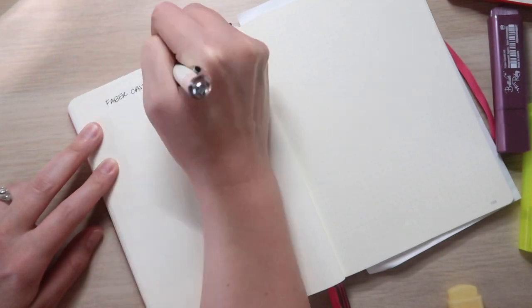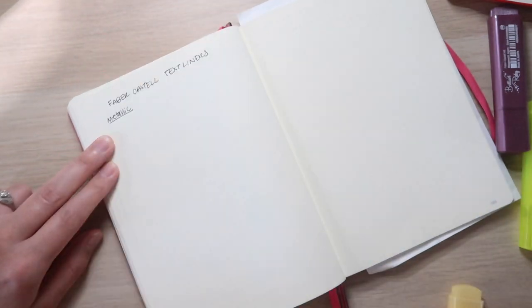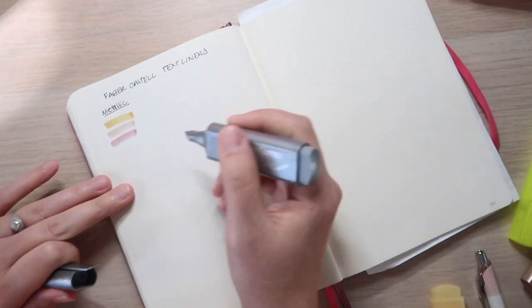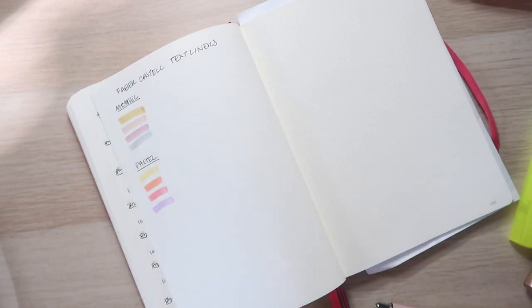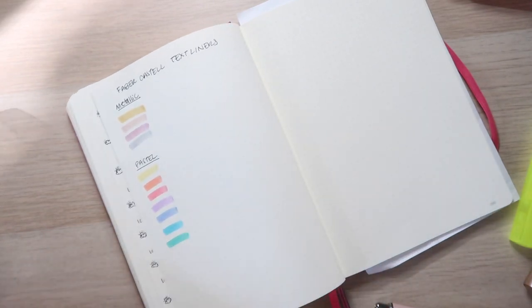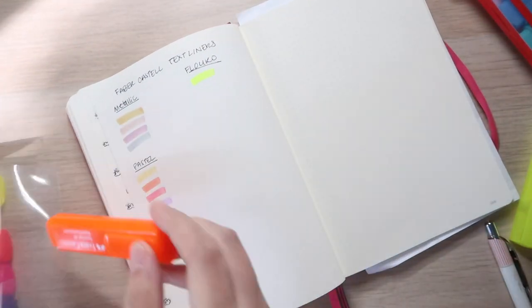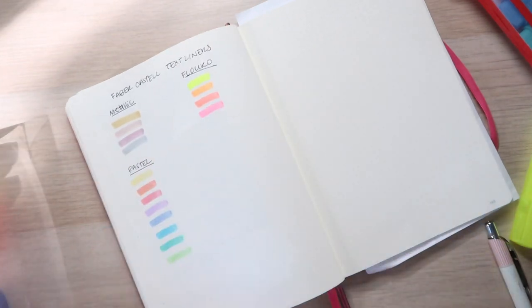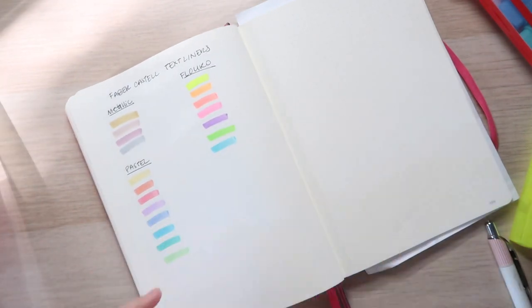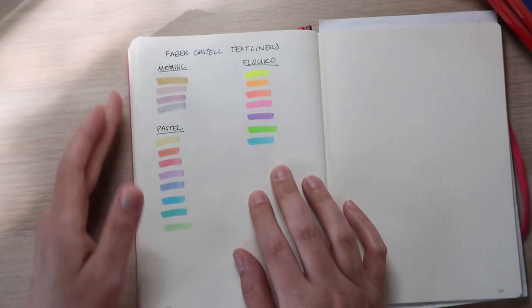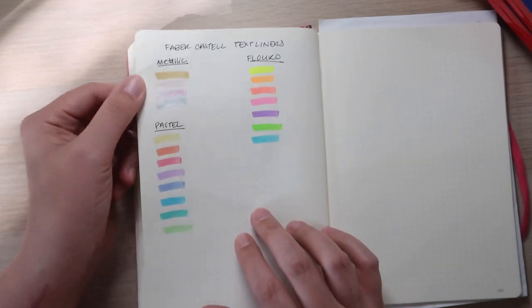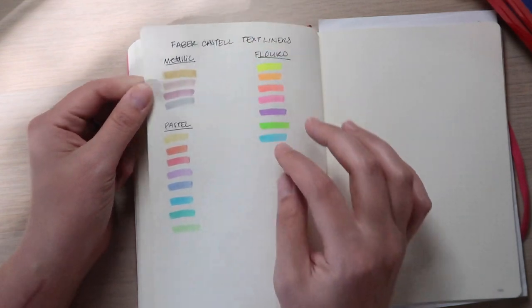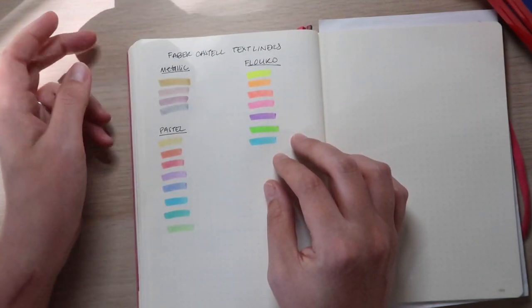All right, I'm going to swatch all of the colors and then we can talk about them. Here is the color selection. We already talked about the metallic and I can see it again here that these three colors are super metallic and the gold is kind of disappointing.